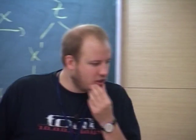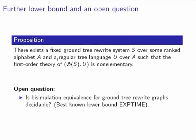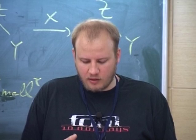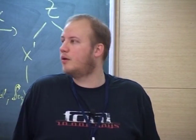As an interesting and perhaps ambitious open problem: is the bisimulation problem for ground tree rewrite graphs decidable — given two ground tree rewrite graphs, are they bisimilar? It is currently not known to be decidable. The best known lower bound is EXPTIME, which also corresponds to the same lower bound for push-down systems, but there's nothing further known. That's all — thanks for your attention.